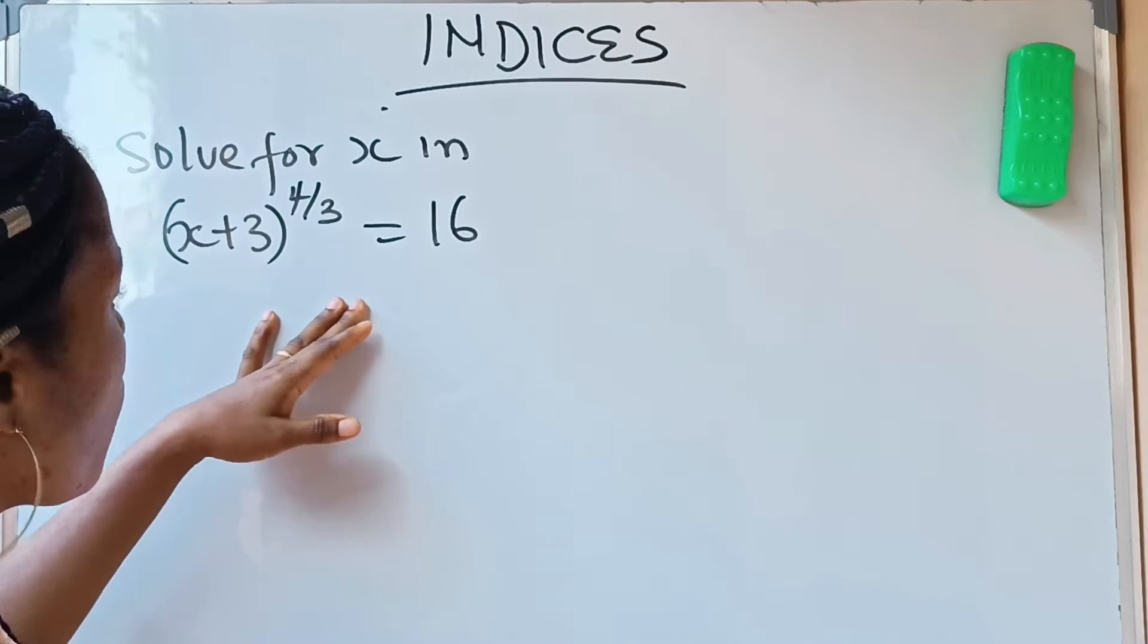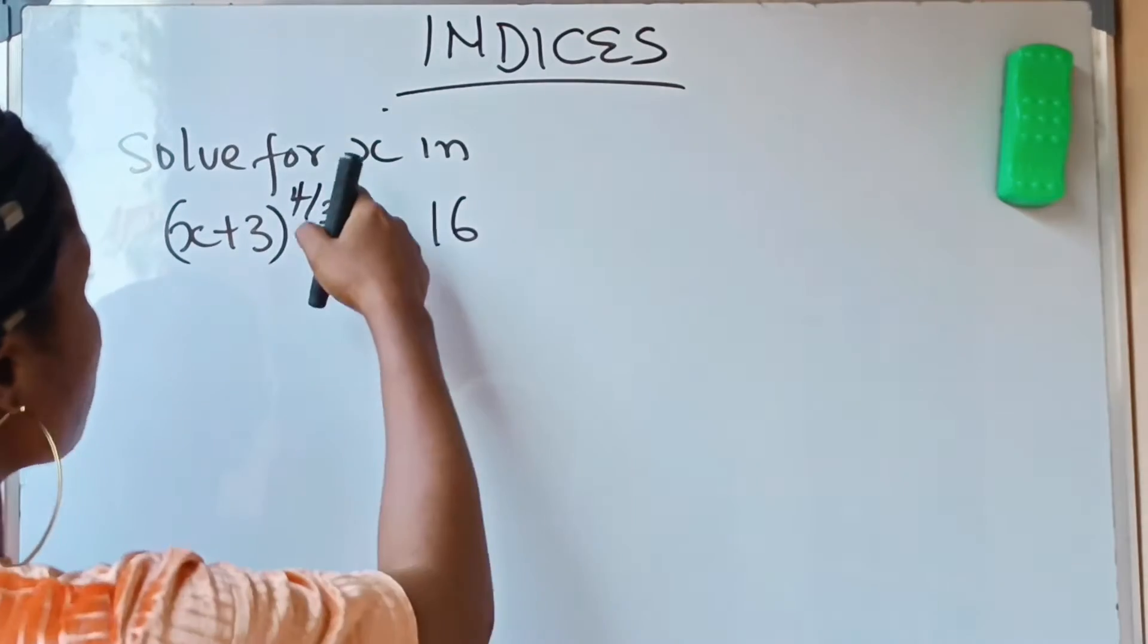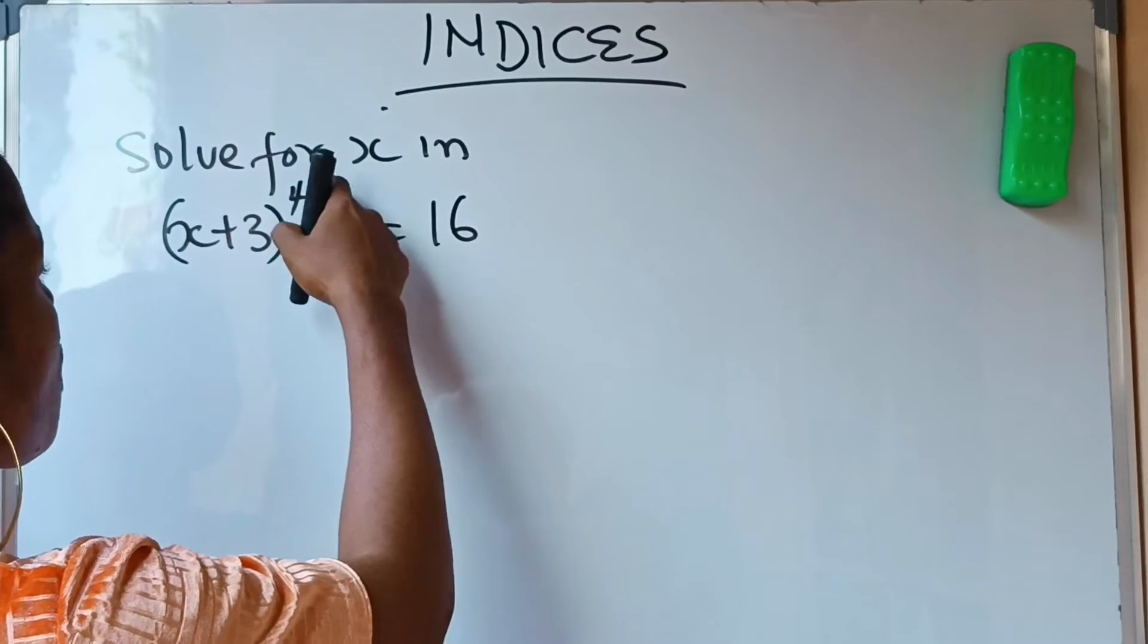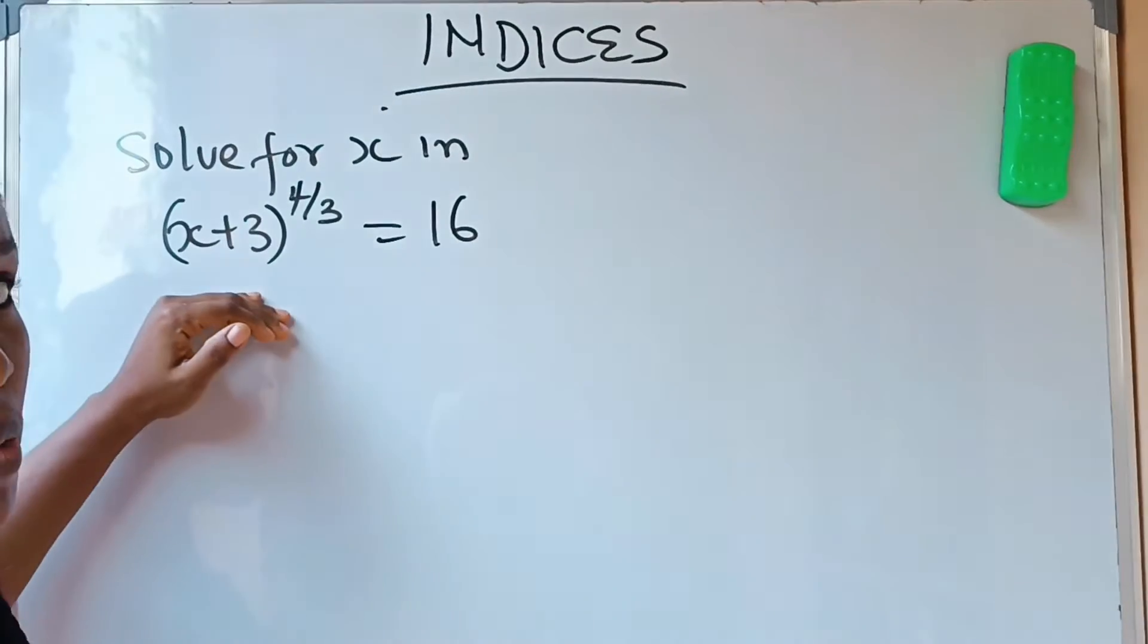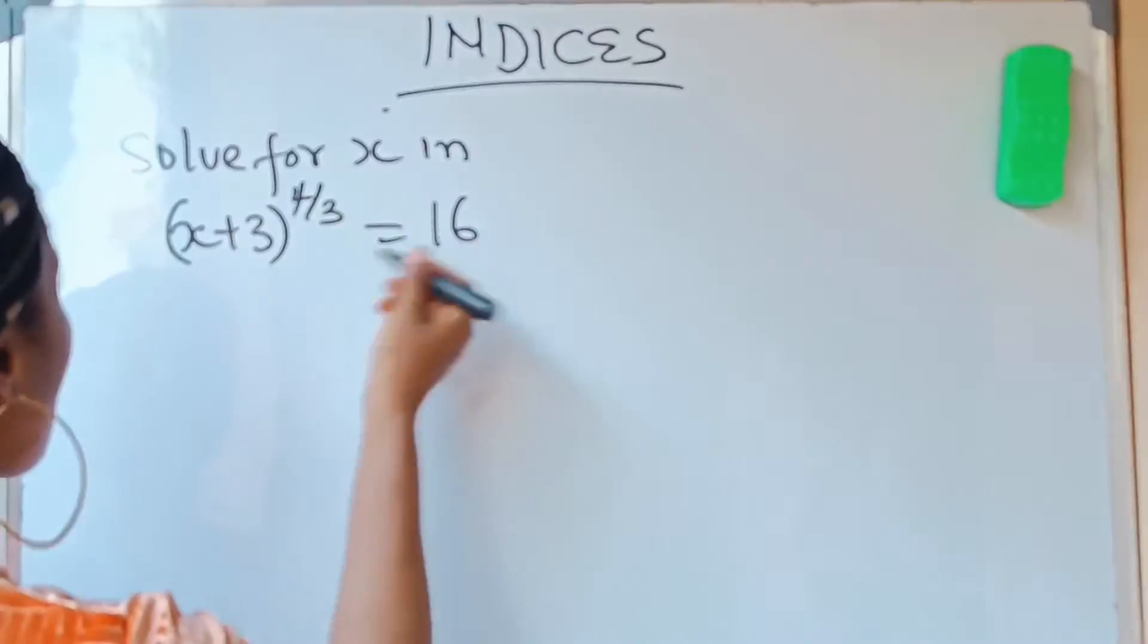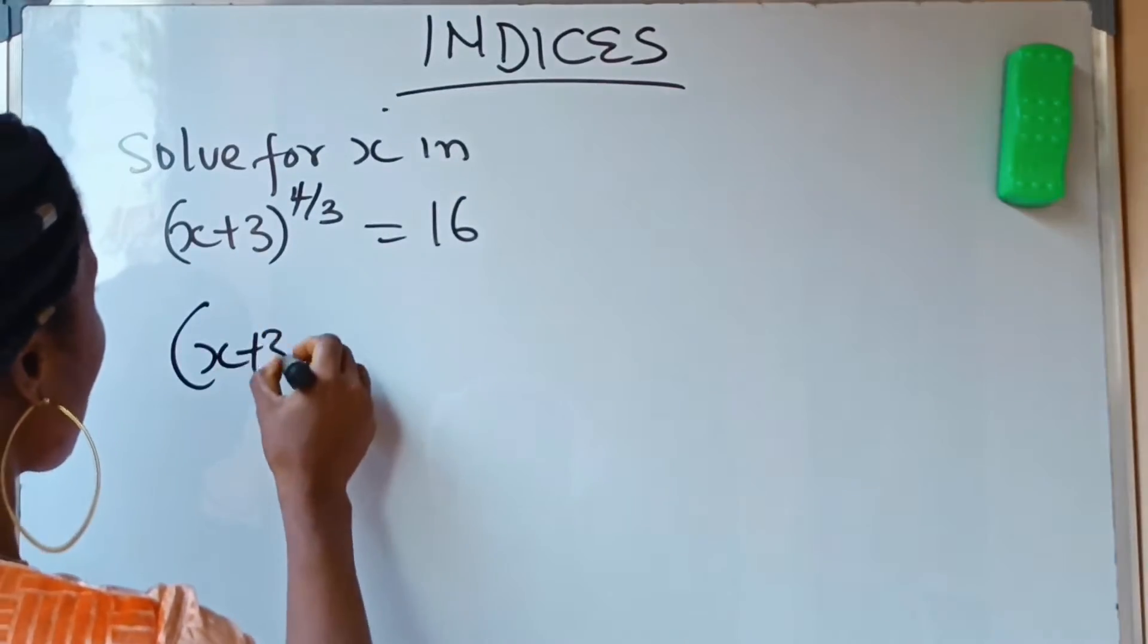The only way we are going to do that is if we multiply this by 3/4, so that only this will remain. So that's what I'm going to do now.